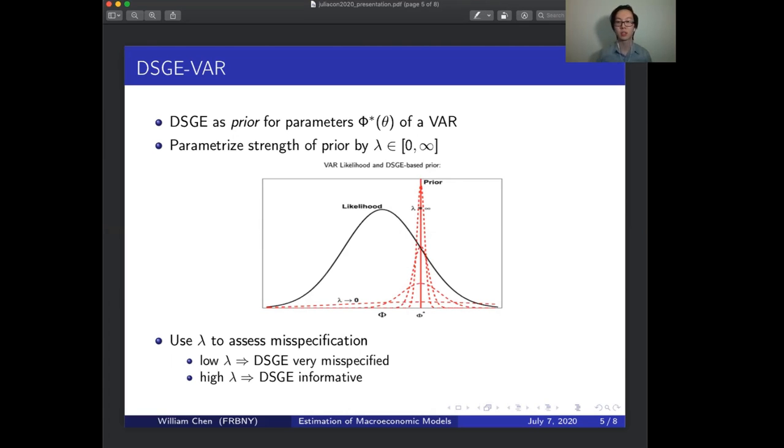In this sense, the value of lambda gets you an idea of the DSGE's misspecification. If the choice of lambda that best fits the data under some metric like marginal data density is very small, then your DSGE has very little predictive value relative to a VAR, which is a standard benchmark for forecasting performance in macro. Conversely, a high value of lambda means that your DSGE has a lot of predictive information, so you should rely on the DSGE relatively more than the VAR to explain the data.